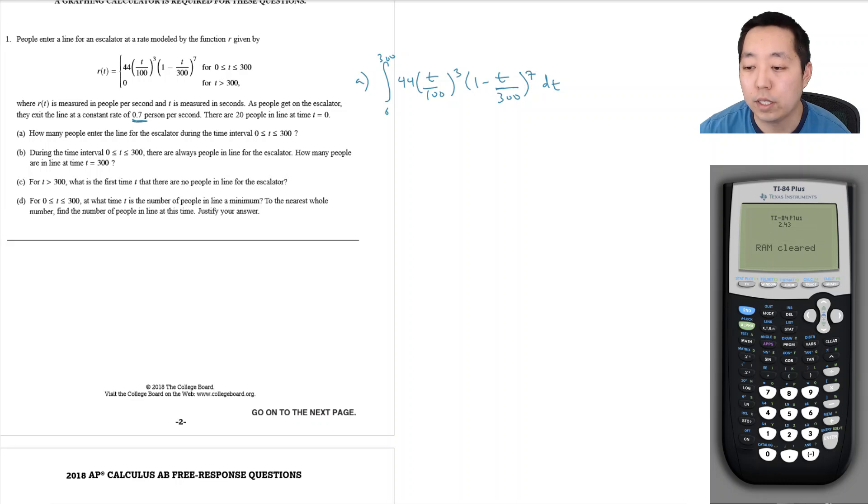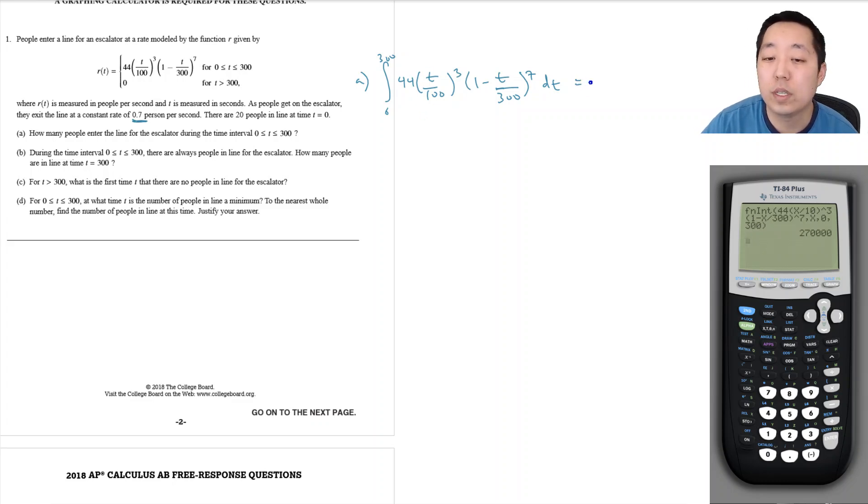Using my calculator to calculate that integral: 44 times x divided by 100 cubed times 1 minus x divided by 300 to the power seventh, integrating from 0 to 300. This ended up being 270 people.